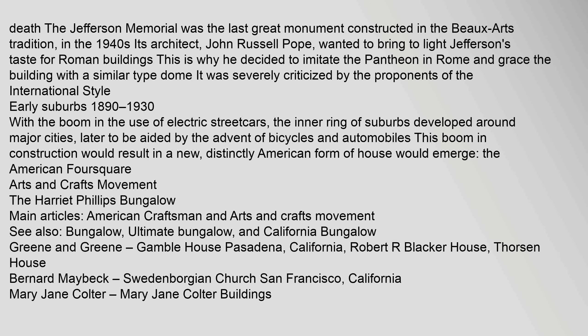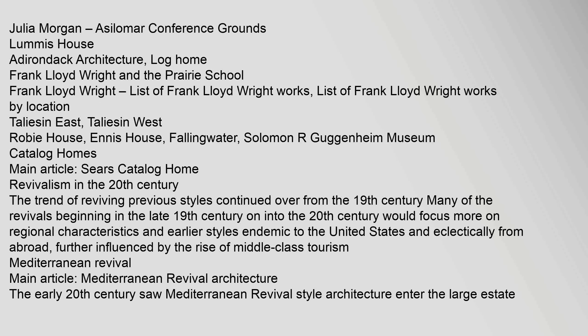With the boom in the use of electric street cars, the inner ring of suburbs developed around major cities, later aided by the advent of bicycles and automobiles. This boom in construction resulted in a new, distinctly American form of house: the American Foursquare. The Arts and Crafts movement flourished in this period, with notable works by Greene and Greene (Gamble House, Pasadena), Bernard Maybeck (Swedenborgian Church, San Francisco), Mary Jane Coulter, and Julia Morgan (Asilomar Conference Grounds). Frank Lloyd Wright and the Prairie School produced landmark works including the Robie House, Ennis House, Fallingwater, and the Solomon R. Guggenheim Museum. Catalogue homes, popularized through Sears, also became widely available during this era.